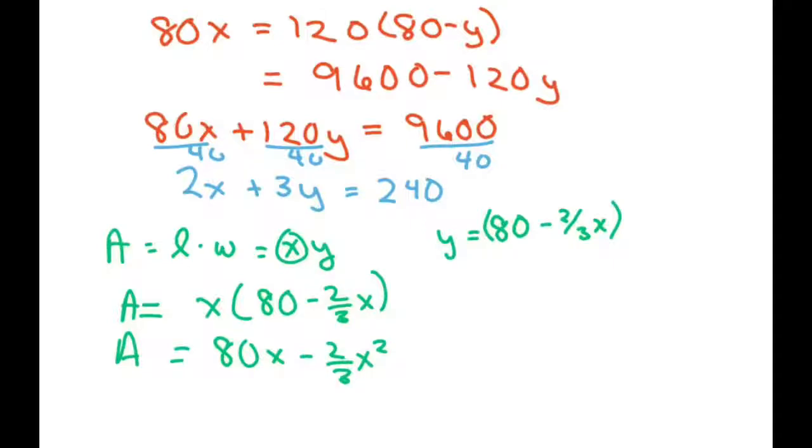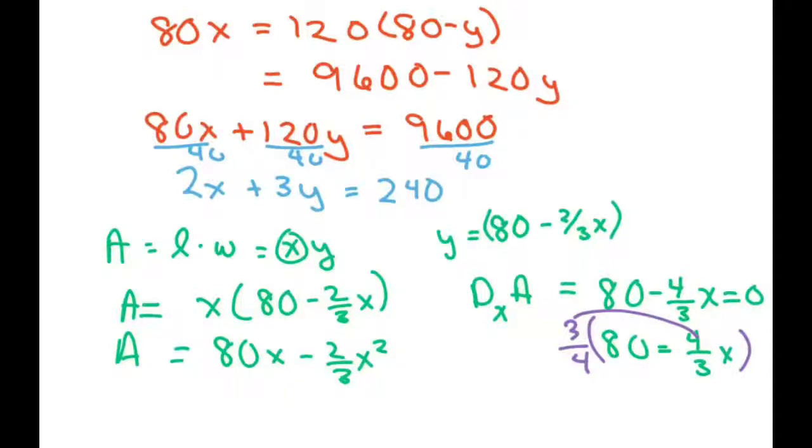Now we're going to take the derivative of our area with respect to X, and that's going to give you 80 minus four-thirds X. Set this to zero, you get 80 equals four-thirds X. Multiply both sides by three-fourths, and that gives you 60 equals X.